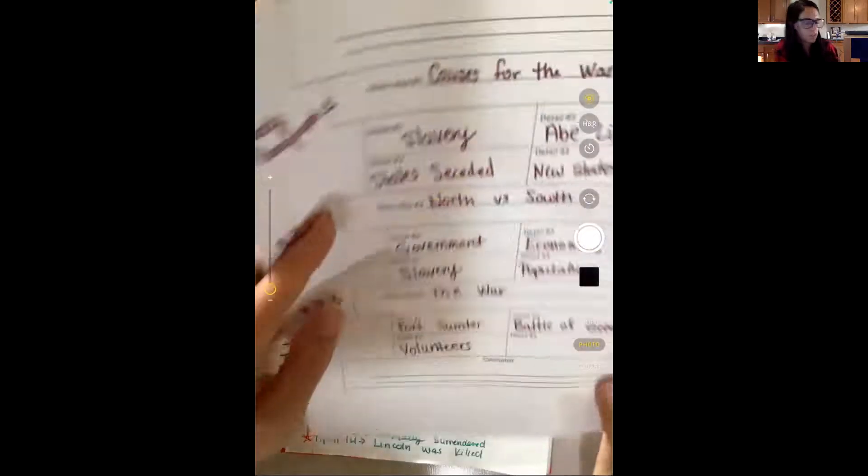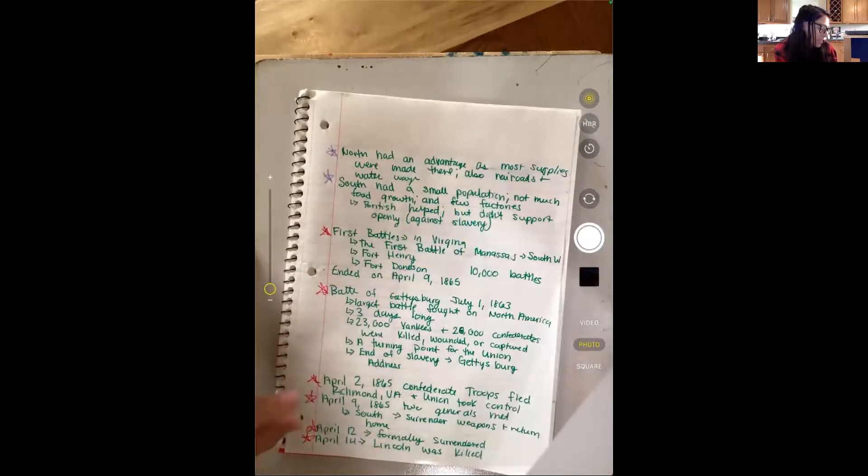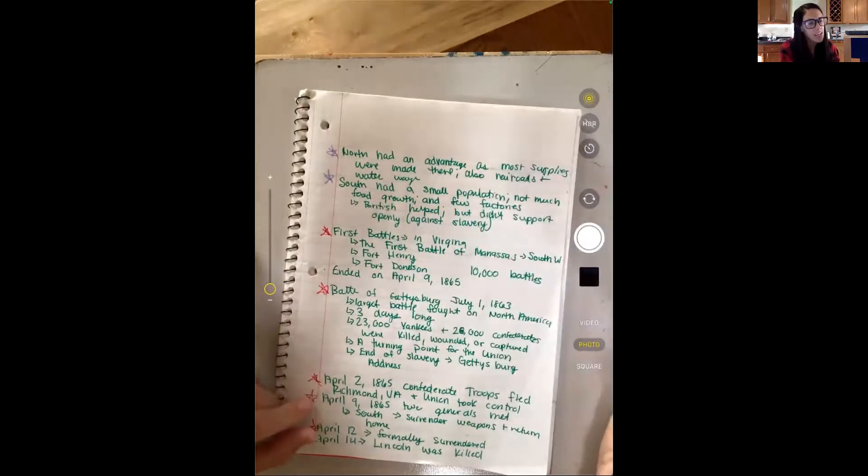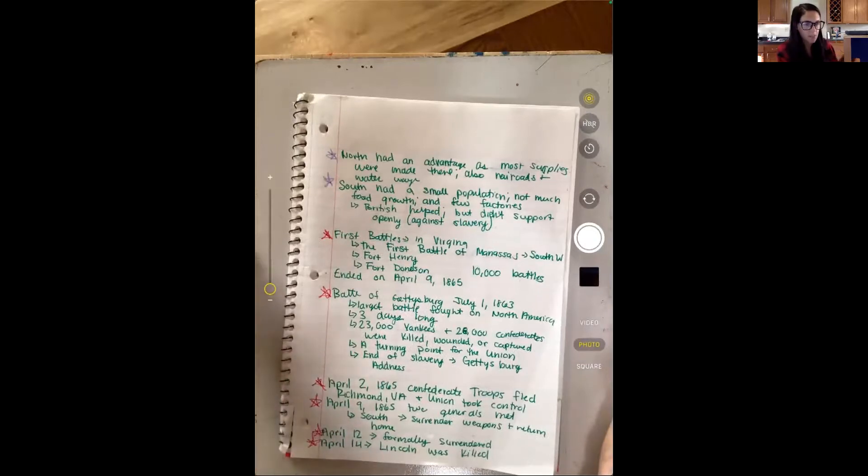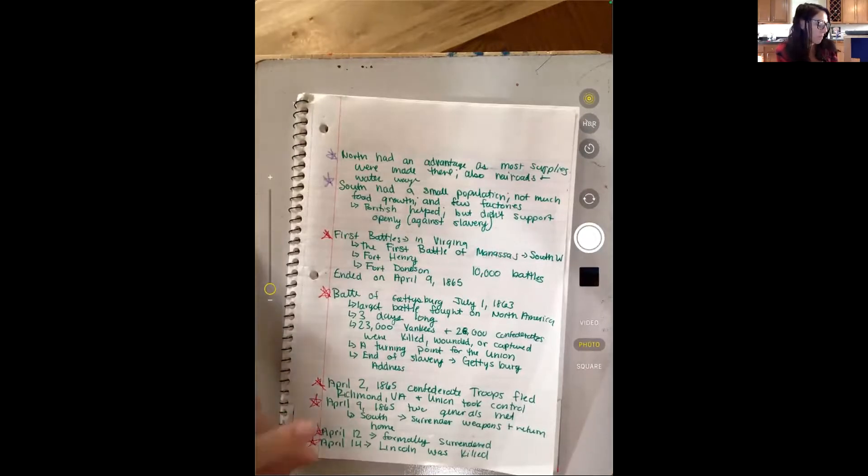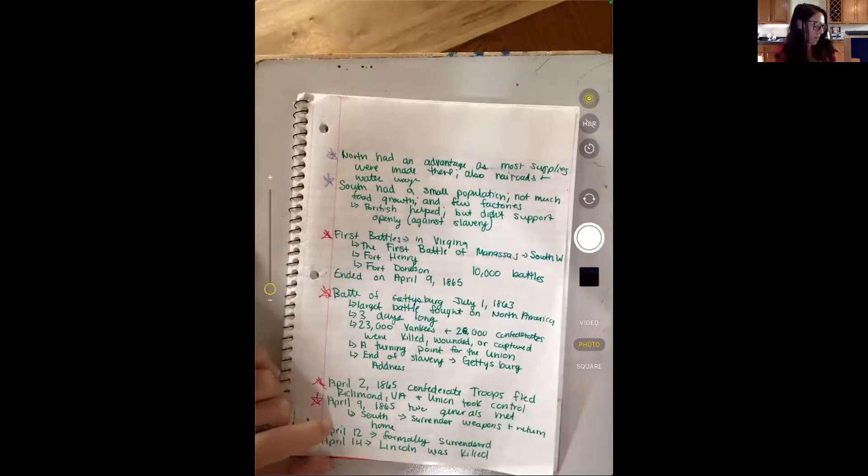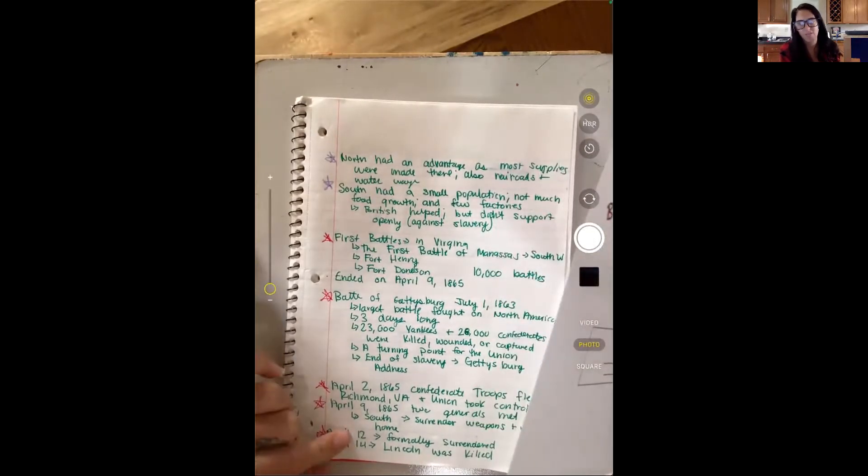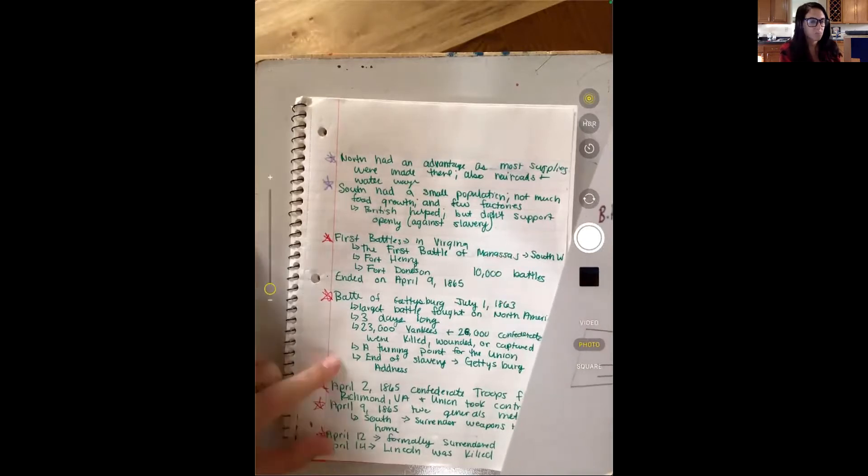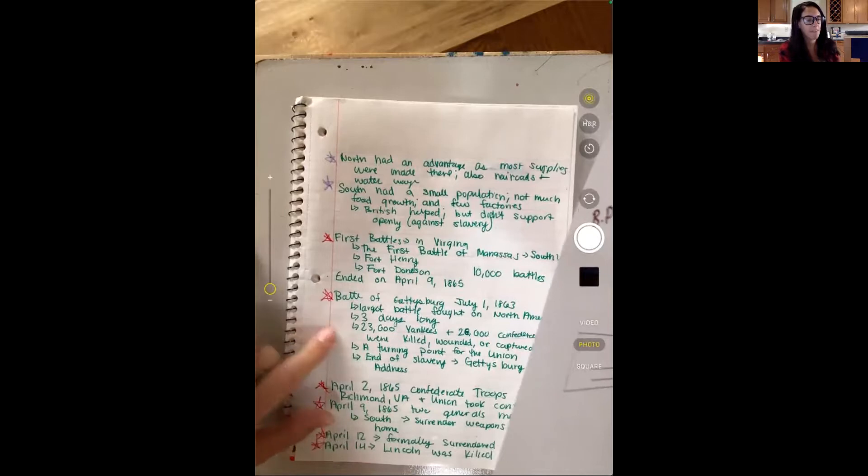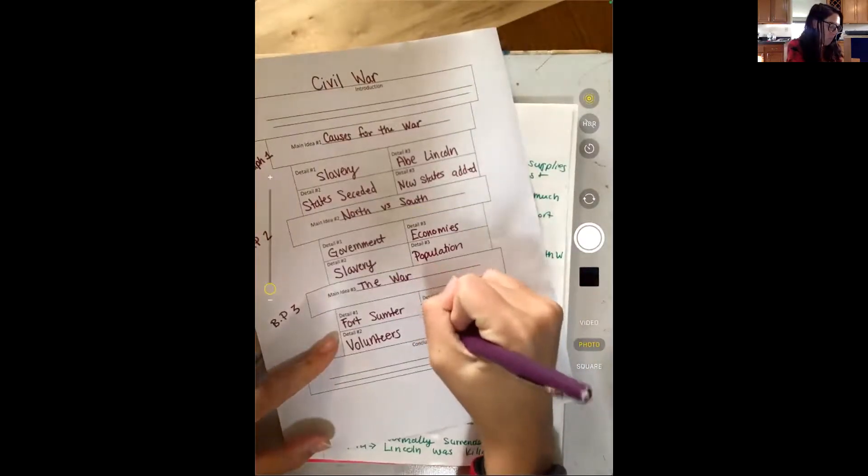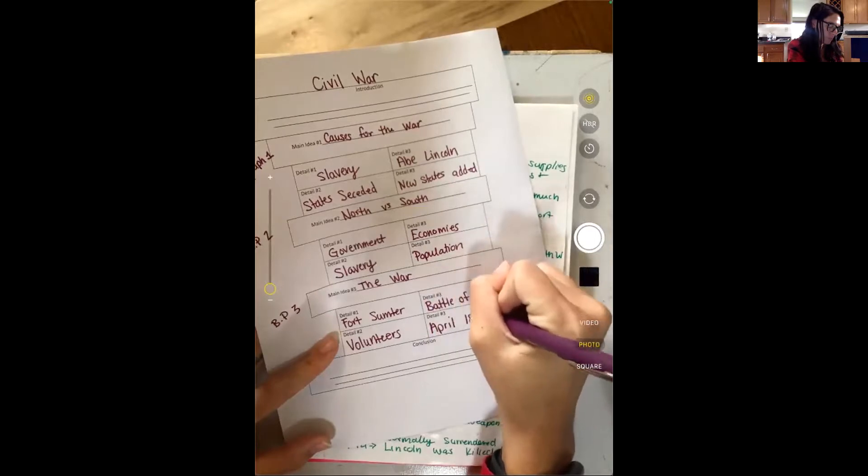You may have even heard of that or the Gettysburg Address. And then the last, I'm just going to put April 1865, because that's kind of when that started the end of the war. So that's when the Confederate, which were the South, their troops fled and the union took control. The union was the Northern troops. April 9th, the generals met, and the South started to surrender. April 12th is when the South formally surrendered. And then April 14th, only two days after the war ended is when Abraham Lincoln was killed. So I'm just going to put April 1865 because there was a lot of things that happened in important events.